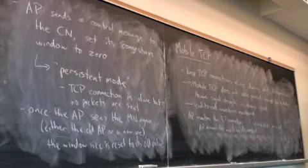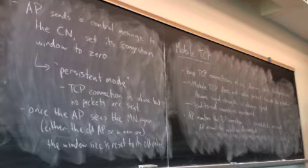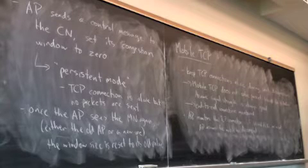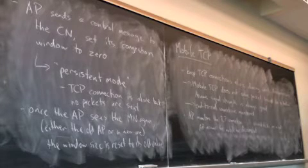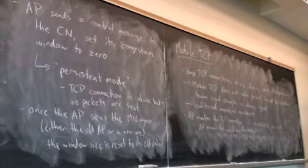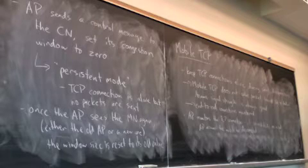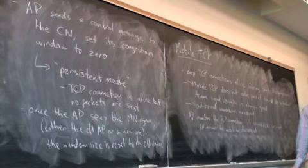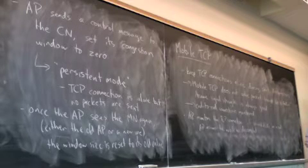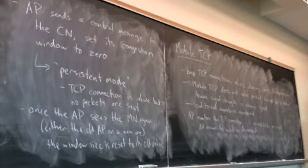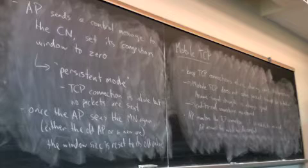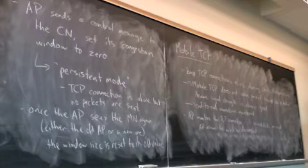Does the corresponding node have a timeout as well? Say you switch off your mobile and then the AP crashes, so there is no communication to set the window size to zero — does the CN have another timeout to say it's sending packets but not getting acknowledgements? I would expect so. In fact, it might even be a higher-level timeout — application layer stuff has timeouts. At some point there would be some kind of timeout that would just drop the connection and forget about it.